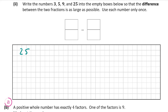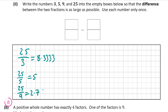For example, 25 over 3 equals approximately 8.33, which is the largest we can make. Compared to 25 over 5, which is 5, or 25 over 9, which is about 2.78. So the biggest fraction is 25 over 3. We're then left with 5 and 9. To make the smallest fraction possible: 5 over 9 is smaller than 9 over 5, so we subtract 5 over 9.